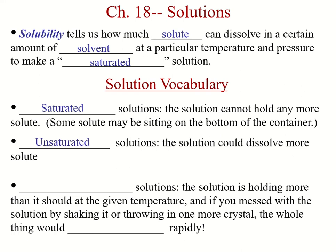Unsaturated is where the solution can dissolve more — you've put some sugar in the tea, for example, but it can still hold more. A supersaturated solution is what happens when we make iced tea, boil it, and get more sugar to dissolve than you would get in cold tea.